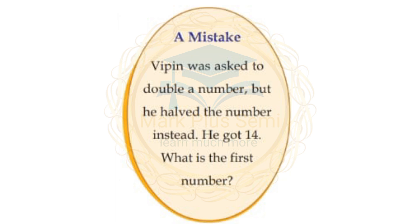A number was given to Vibin. He was supposed to double it, but what did Vibin do? He halved it — took half of it. To find half of a number, divide by 2. So if half of the number gives 14, and half means dividing by 2, let's say 10: half of 10 is 10 divided by 2, which is 5.